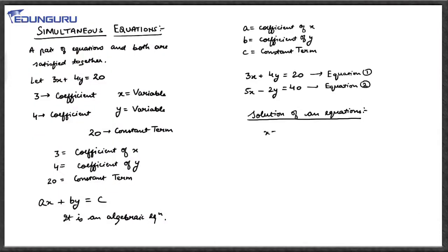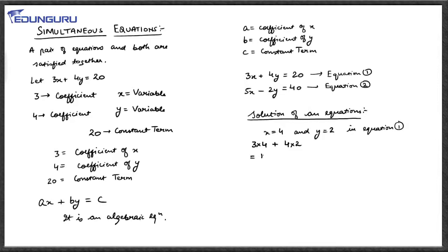Let's put x equal to 4 and y equal to 2. Then 3x becomes 3 into 4, and 4y becomes 4 into 2. So the left-hand side becomes 3 into 4 plus 4 into 2, which is 12 plus 8, which equals 20. So when we put x equal to 4 and y equal to 2, it seems the equation is satisfied.